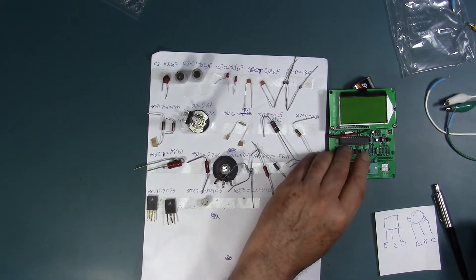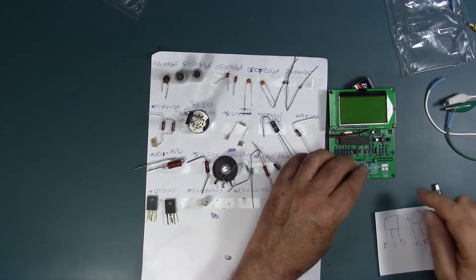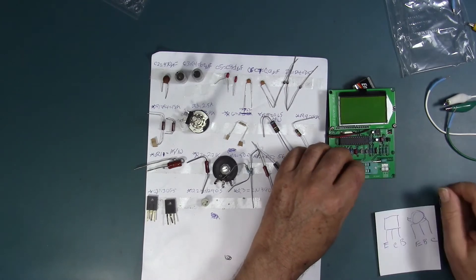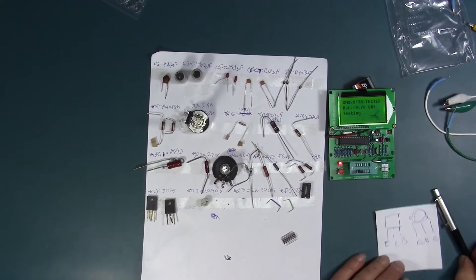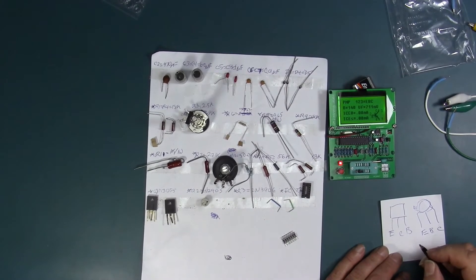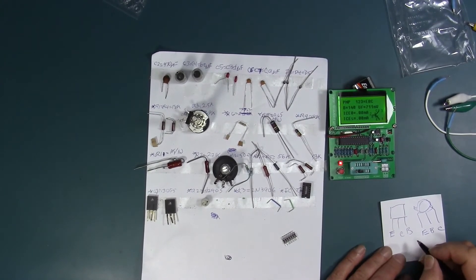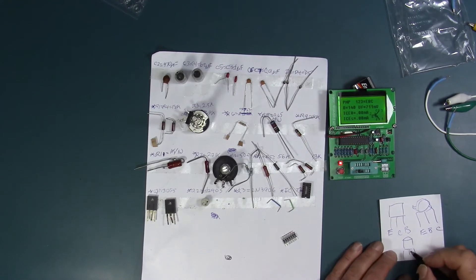And now the 3906, 2N3906. For components like this, the zero insertion of force connector is fine. EBC, forward voltage of 0.711 is interesting. PNP is accurate. I'm not quite sure what the ICEs are.